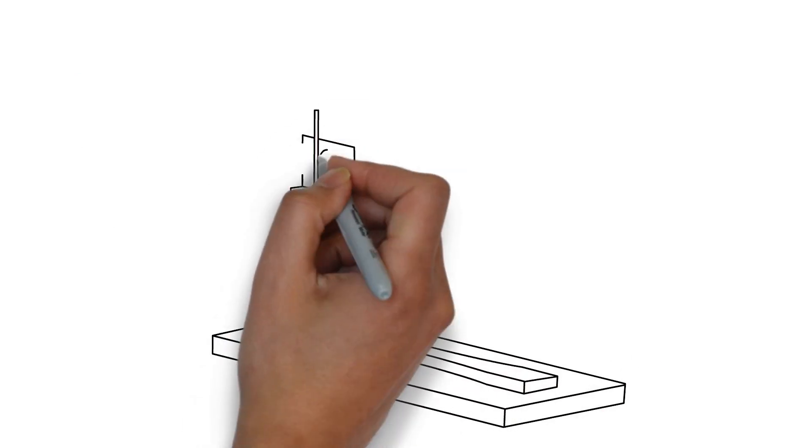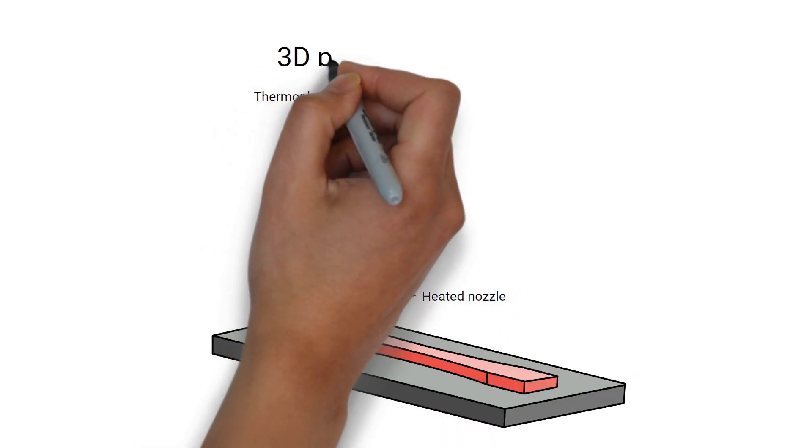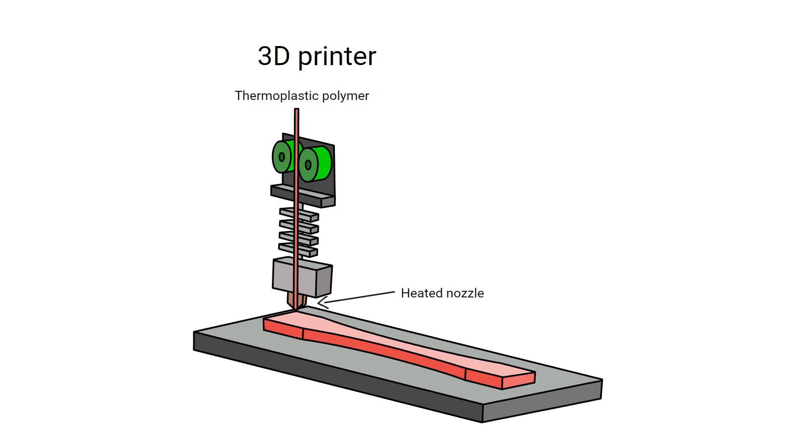Thermoplastic polymers melt at high temperatures and this is how a typical FDM or fused deposition modeling 3D printer works. The printer melts the plastic and reforms it into another shape.